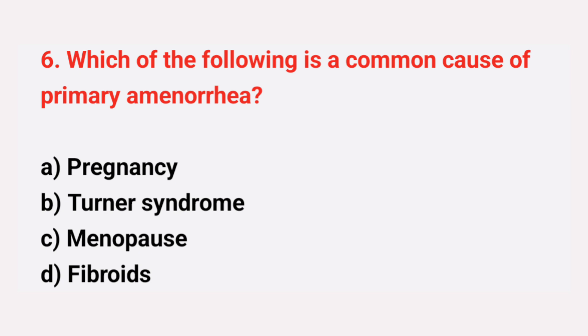Question number 6: Which of the following is the common cause of primary amenorrhea? The right answer is option B, Turner syndrome.